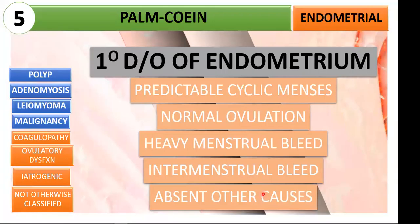Next is AUB-E: endometrial. Consider a primary disorder of the endometrium in women with predictable cyclic menses and normal ovulation who present with heavy menstrual bleed and intermenstrual bleed. Take note that other causes should be absent — it is a diagnosis of exclusion. When you have already ruled out all other organic causes, that is the time you consider a primary disorder of the endometrium.